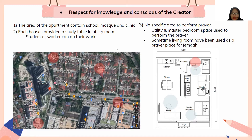My second point: each house is provided with a study table in the utility room. As you can see in the picture, the red circle marks the table in the utility room. Students or workers can do their work there, which is encouraged in Islam. Third, there is no specific area designated for prayer in this house — we use the utility room, master bedroom, or living room for prayer.